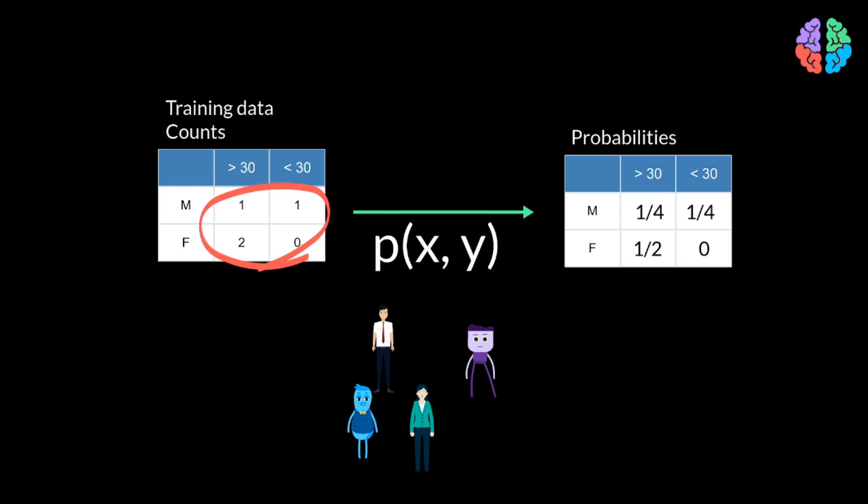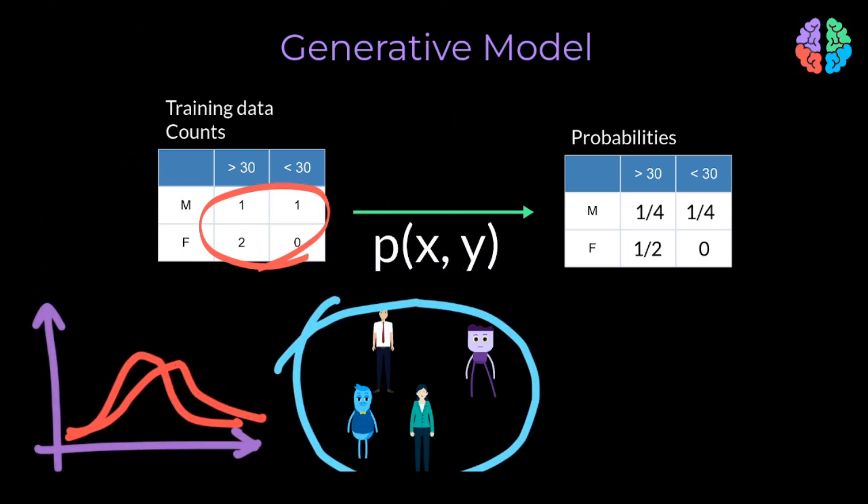And if a model learns this joint distribution, it's called a generative model. Unlike discriminative models, the generative model jointly learns the probability of the entire dataset without drawing any boundaries. And so, generative models are well suited for almost all unsupervised tasks.